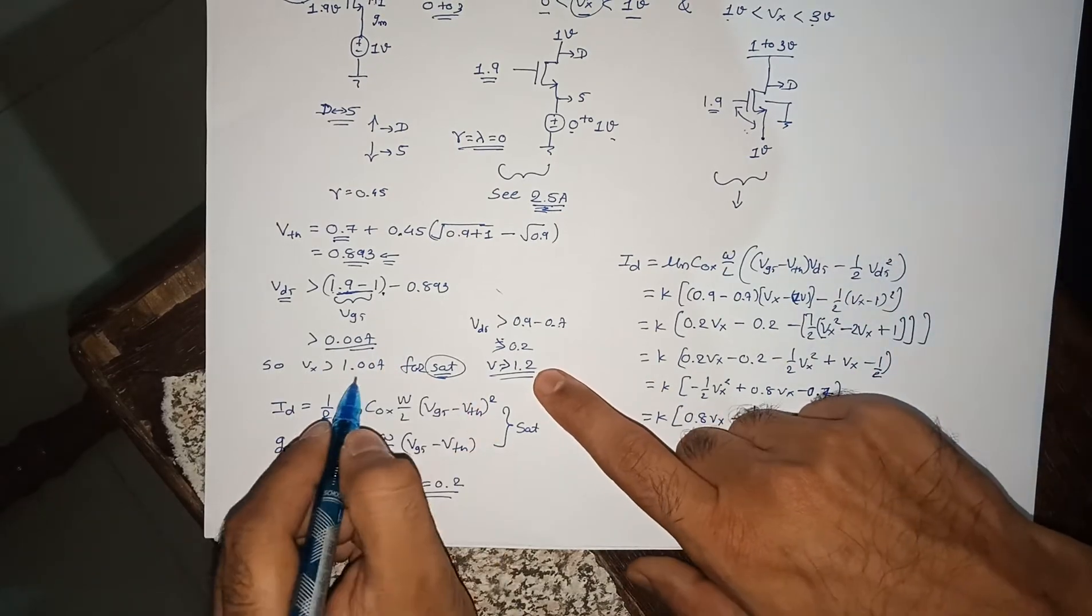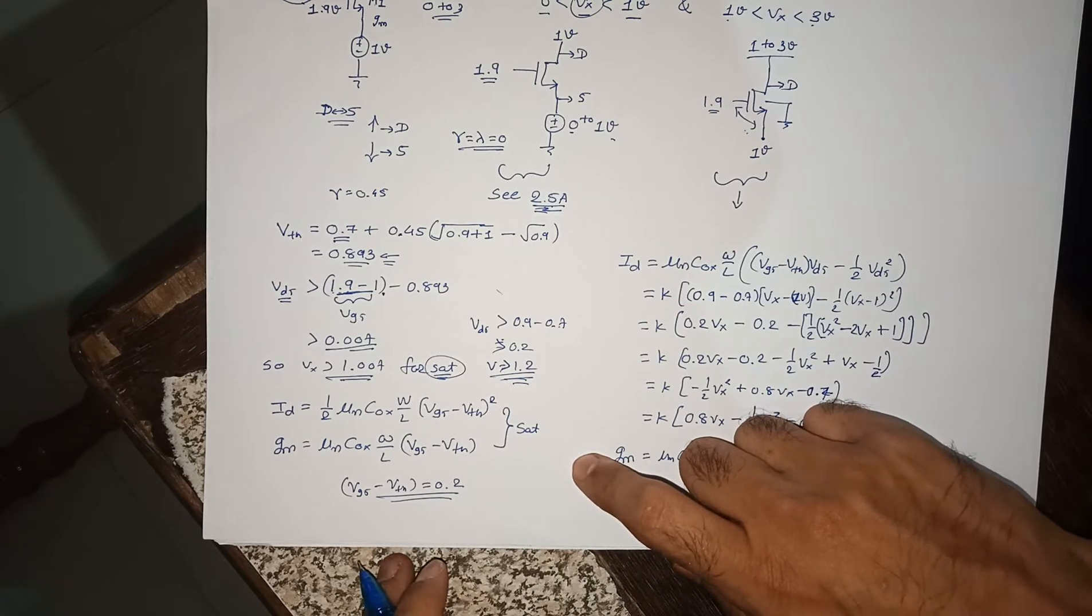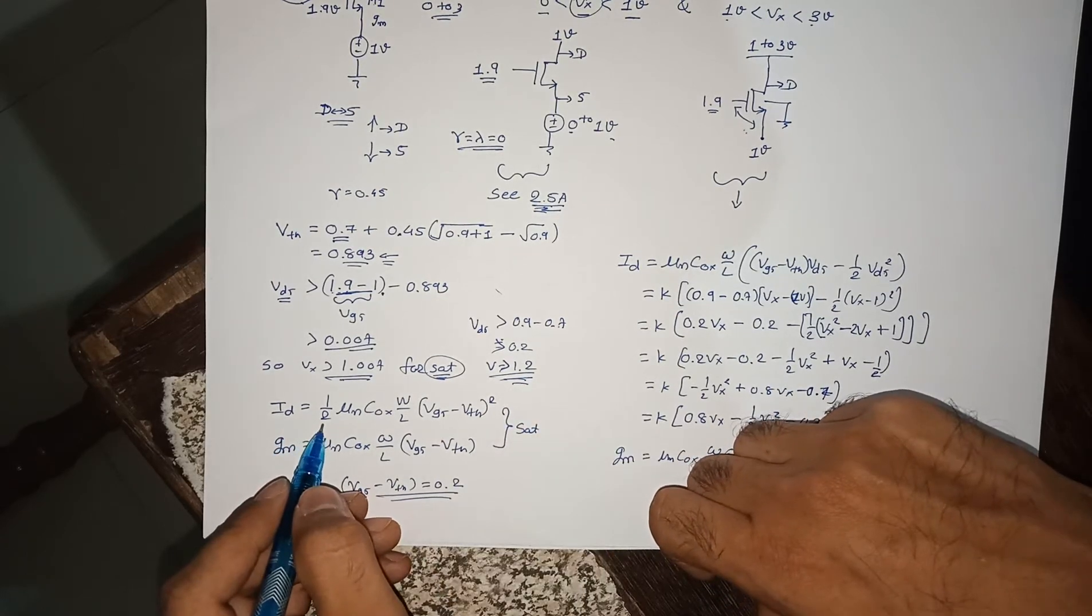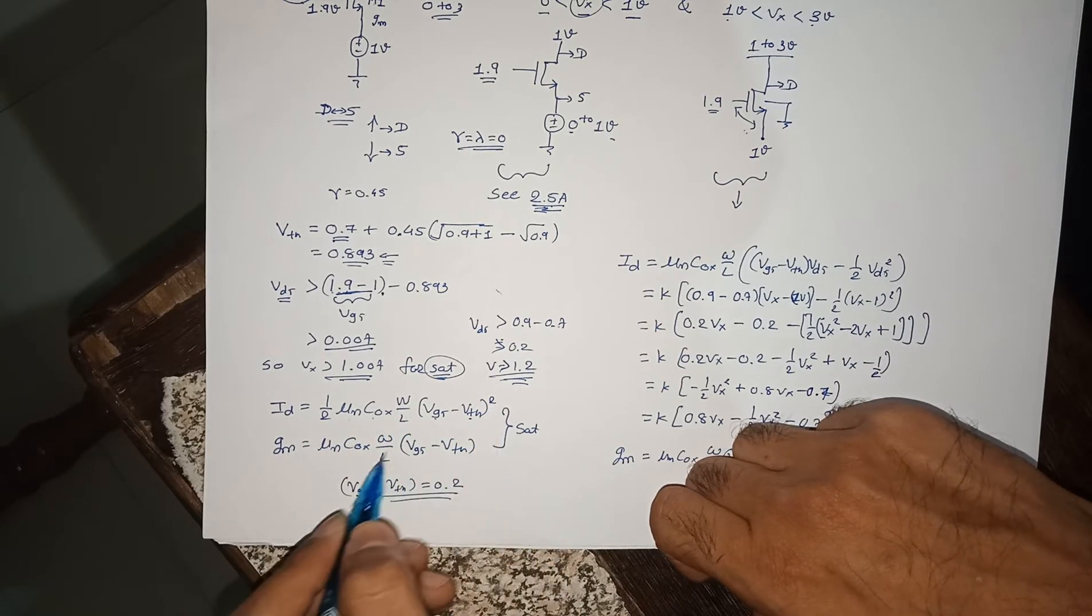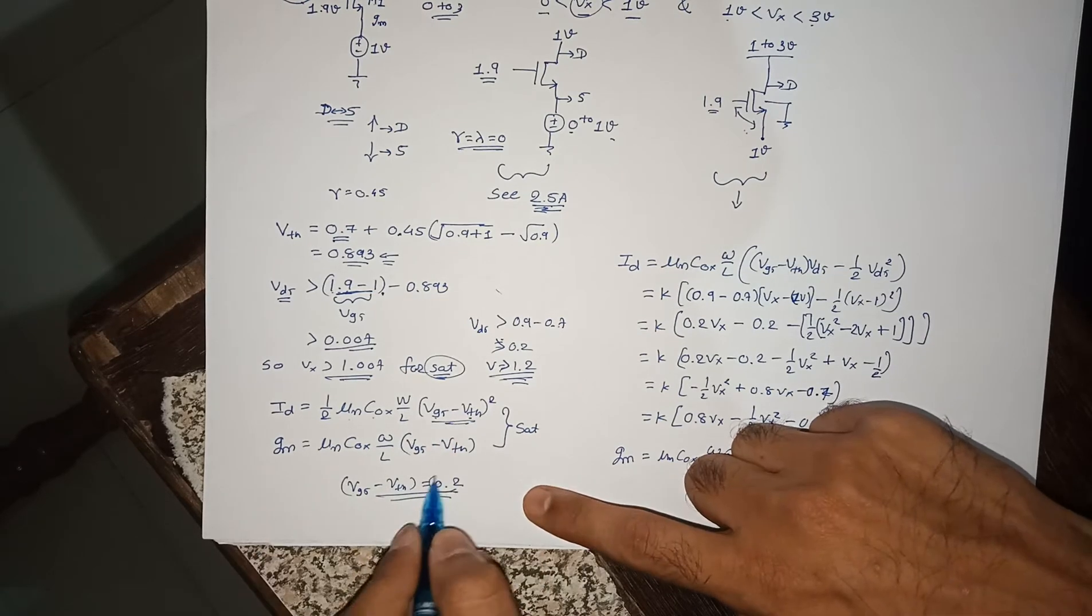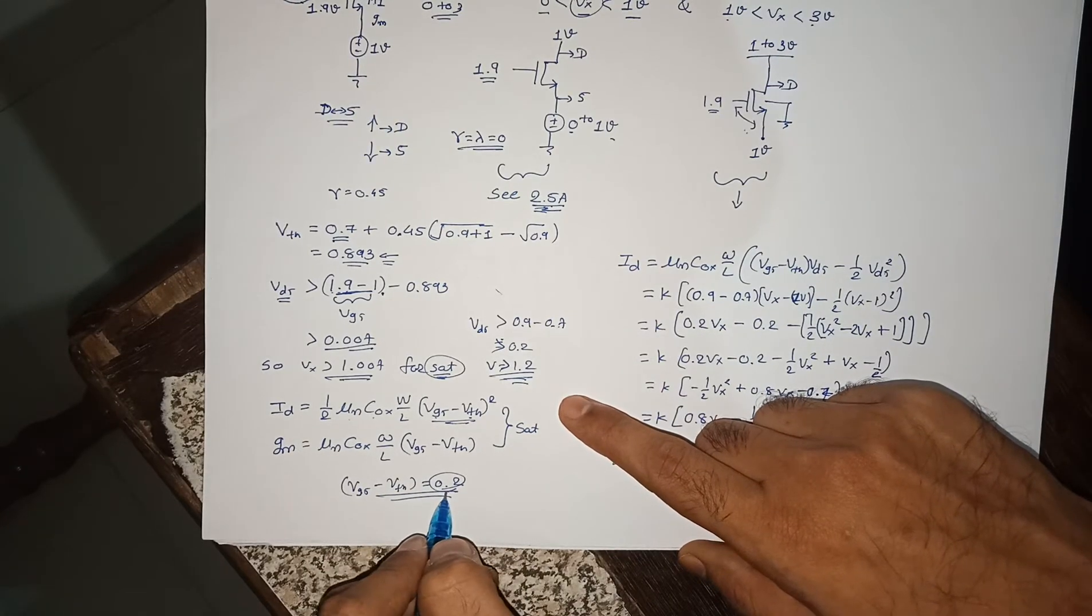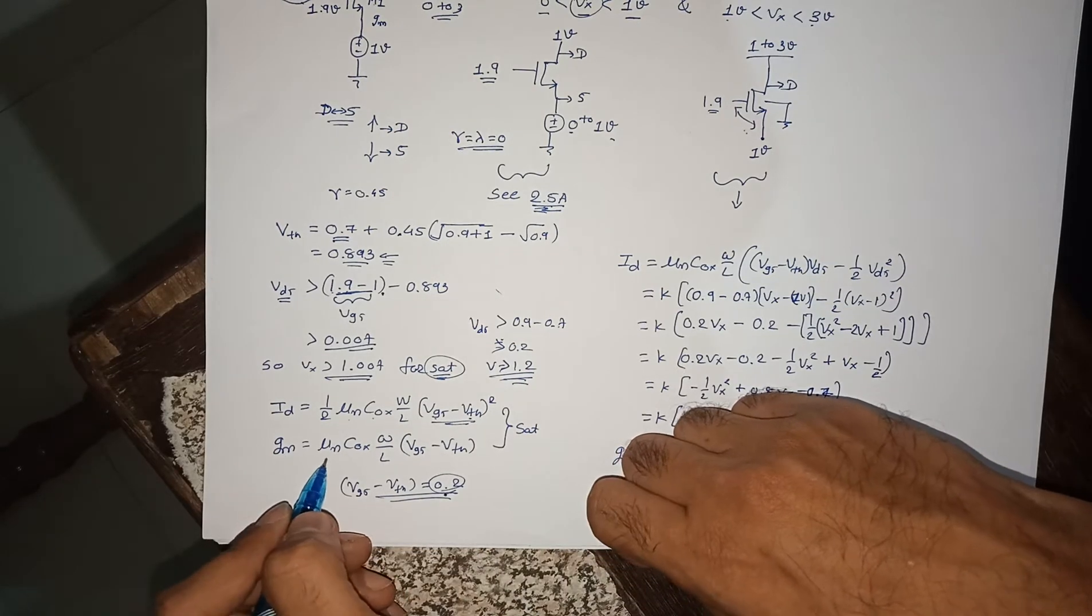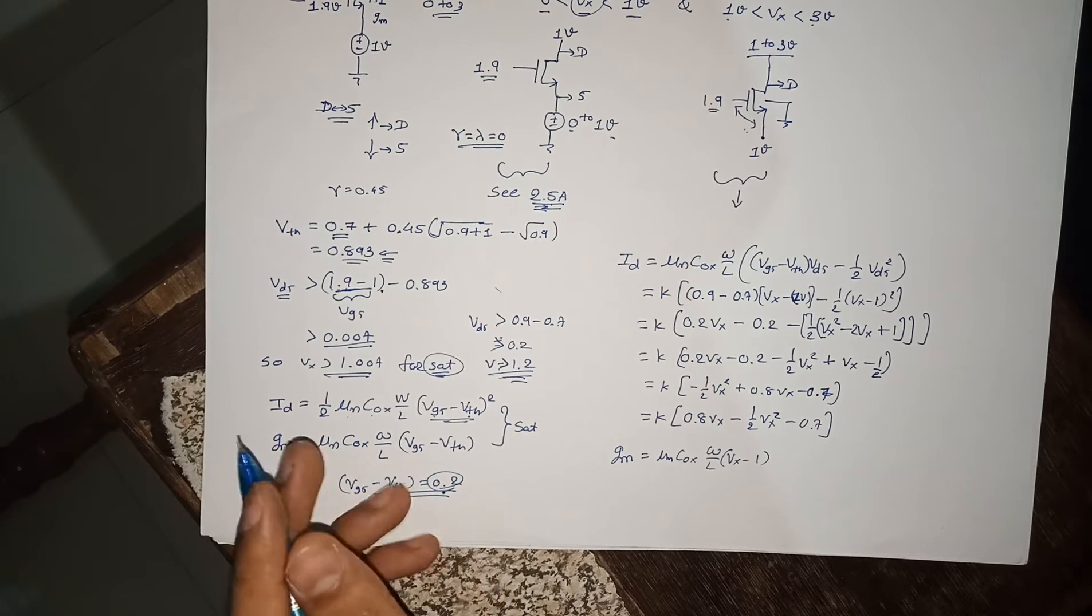Here is the difference if you are considering body effect and if you are not considering body effect. Your VGS minus Vth will be 0.2, otherwise it will be 0.007. And your equation of gm will be μn Cox.